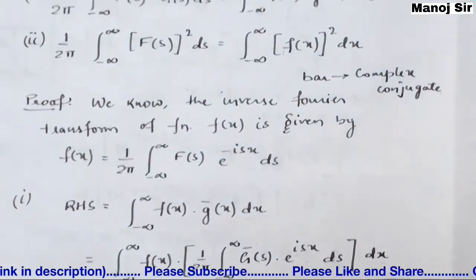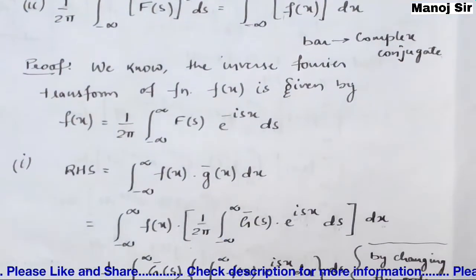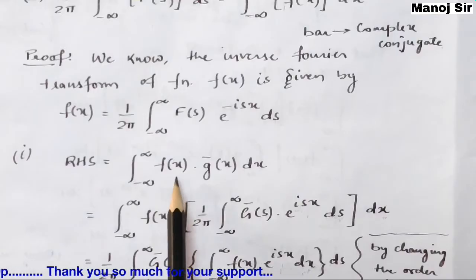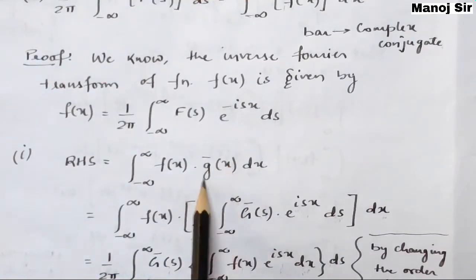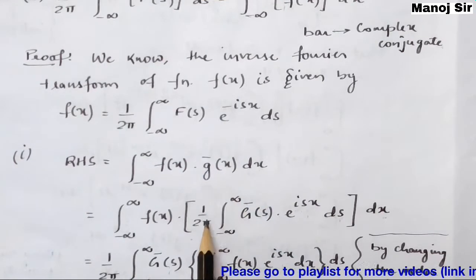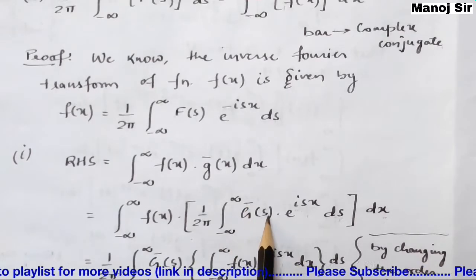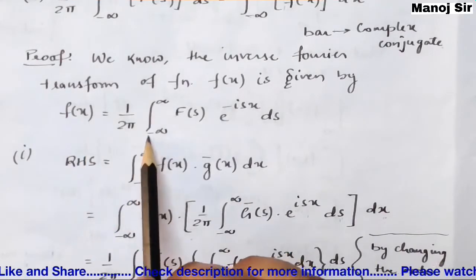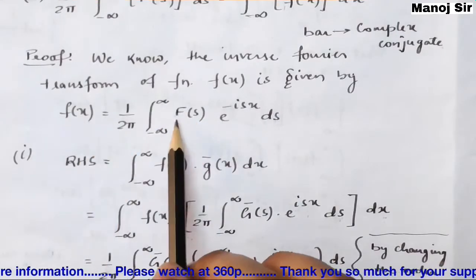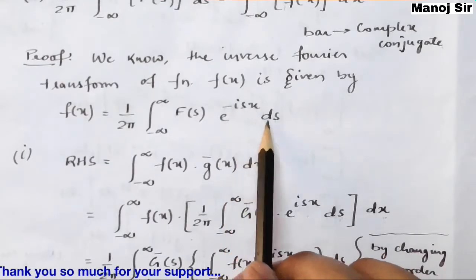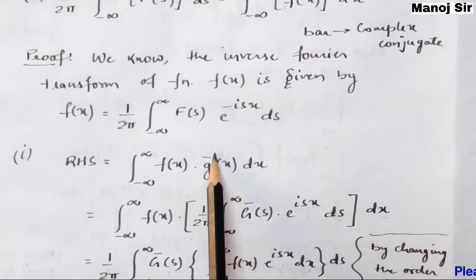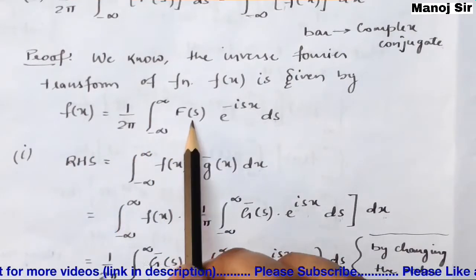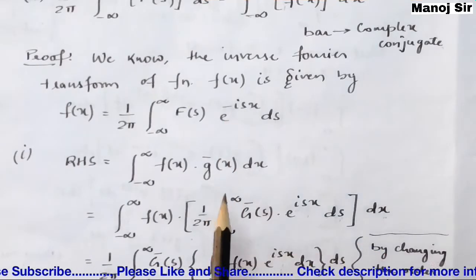The RHS part is: ∫₋∞^∞ f(x) · ḡ(x) dx. Now I will write ḡ(x) as something. We know g(x) = (1/2π) ∫₋∞^∞ G(s) · e^(−isx) ds, so ḡ(x) = (1/2π) ∫₋∞^∞ Ḡ(s) · e^(isx) ds. So the RHS becomes: ∫₋∞^∞ f(x) · [(1/2π) ∫₋∞^∞ Ḡ(s) · e^(isx) ds] dx.